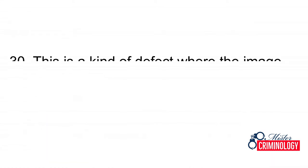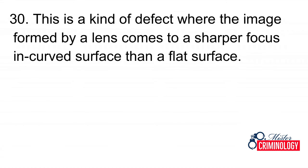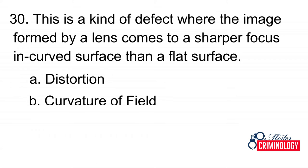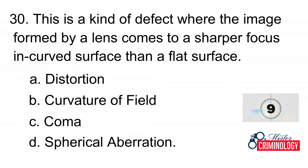Question 30: This is a kind of defect where the image formed by a lens comes to a sharper focus on a curved surface than a flat surface. A. Distortion, B. Curvature of Field, C. Coma, D. Spheric Aberration. Answer: B. Curvature of Field.